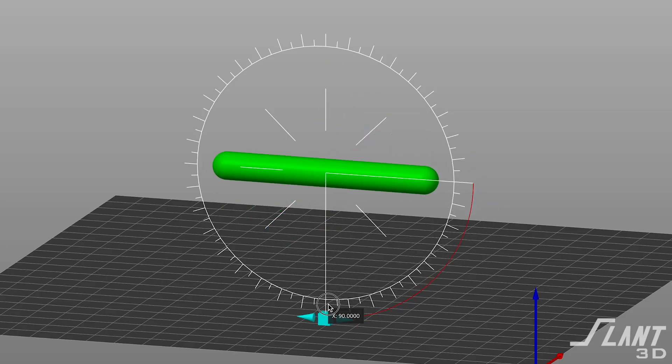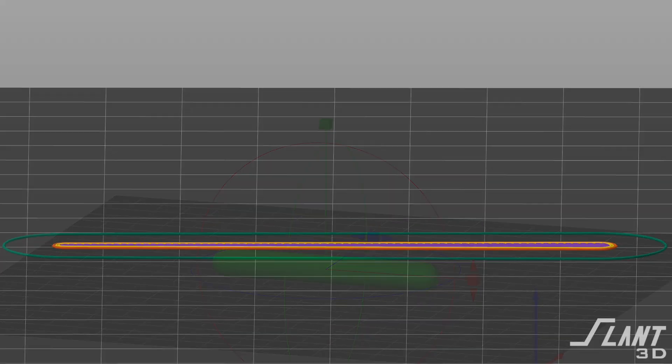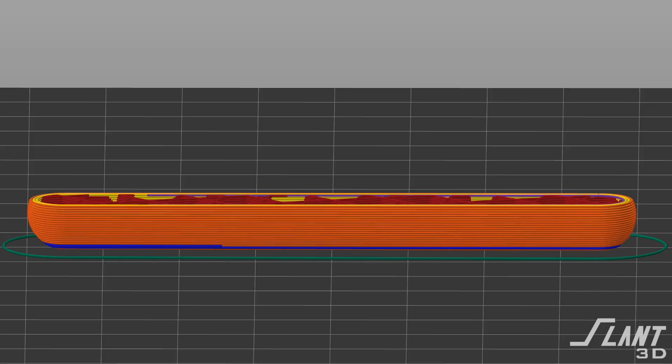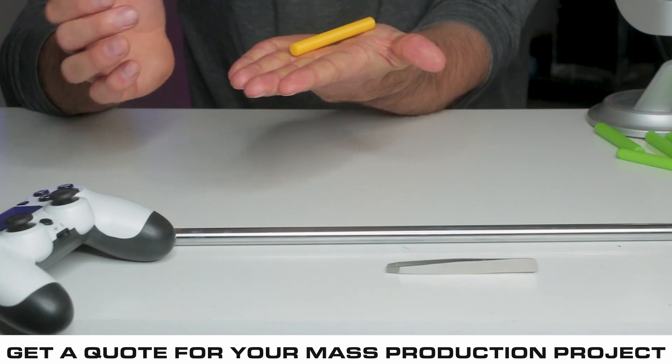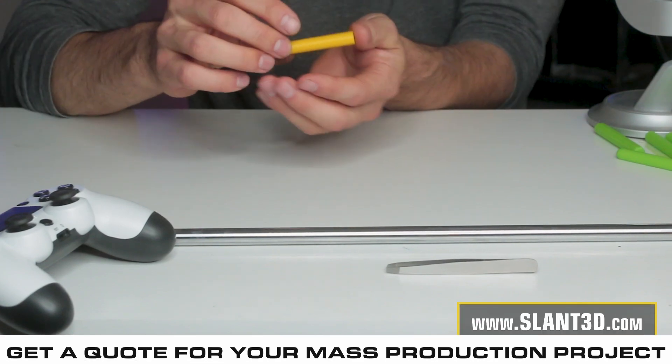If you are making something tall and skinny, you probably want to lean it sideways. This way when it's printed, the layer lines are in the plane of the rod itself, so you have something that is much stronger or as strong as really any other process would ever produce.